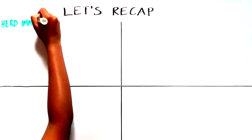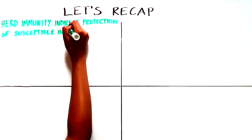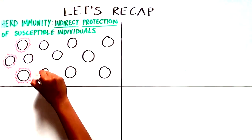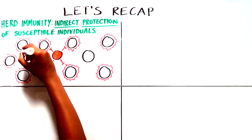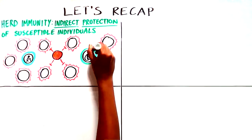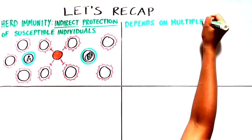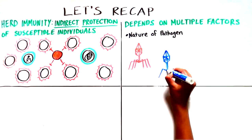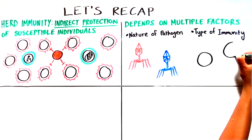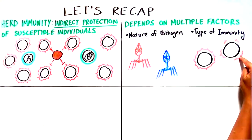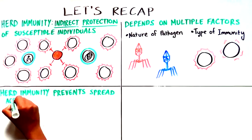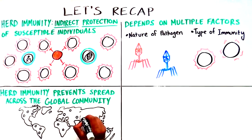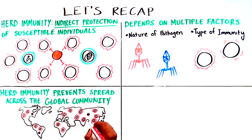Let's recap. Herd immunity is the indirect protection from infection conferred to susceptible individuals when a sufficiently large proportion of immune individuals exist in a population. Achieving herd immunity is a complex and dynamic process, dependent on multiple factors, including the nature of the infectious pathogen and the type of immunity it generates. Herd immunity cannot quell a disease outbreak on its own, but it is a critical way to prevent the spread and damage of an infectious agent across the global community.